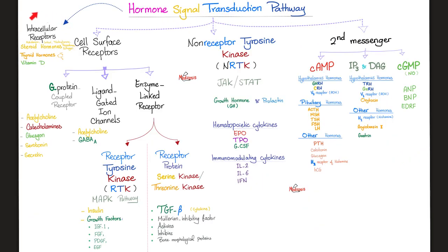Hormone signal transduction pathway: we have intracellular receptors for lipid-soluble hormones, and cell surface receptors — G-protein, ligand-gated, and enzyme-linked. Enzyme-linked includes receptor tyrosine kinase, which is the story of insulin and growth factors, and serine/threonine kinase, which is the story of TGF-beta. Glucagon is G-protein coupled; insulin is receptor tyrosine kinase. Non-receptor tyrosine kinase, or the JAK-STAT pathway, covers growth hormone, prolactin, GCSF, interleukins, and interferon. Note that growth factors use RTK, but growth hormone uses JAK-STAT.